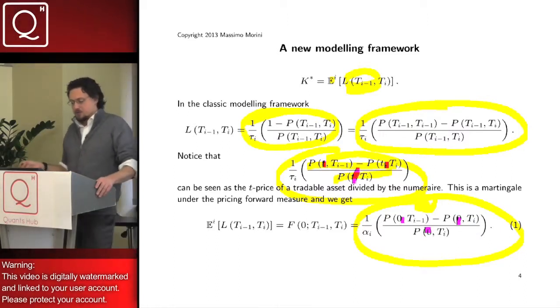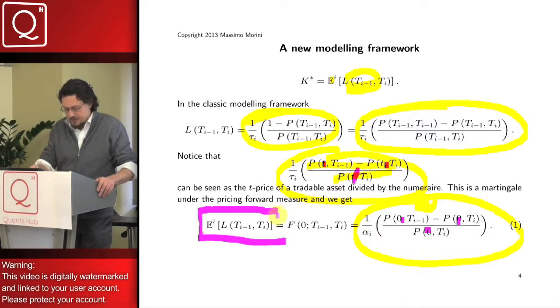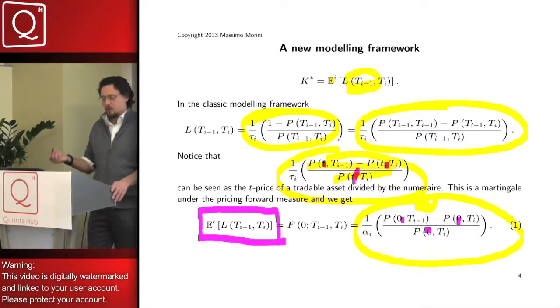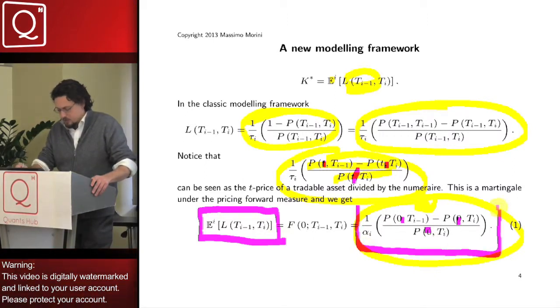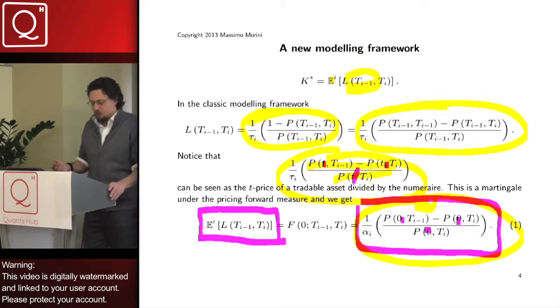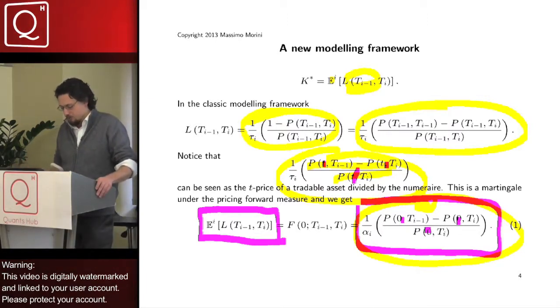But so, we have found again a result such that the equilibrium rate of a FRA, that is actually also expressed as forward expectation of the future LIBOR, thanks to the properties of forward expectation, can always be expressed as a ratio of bonds.